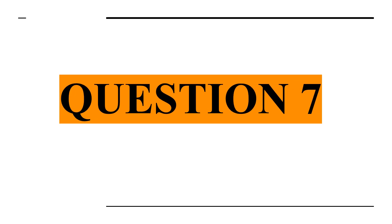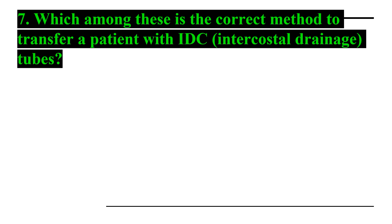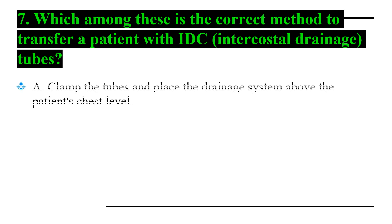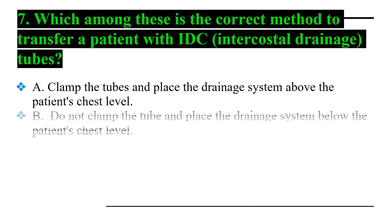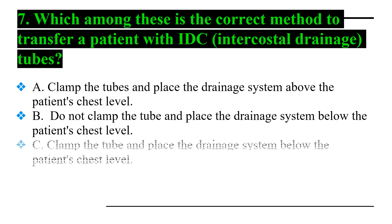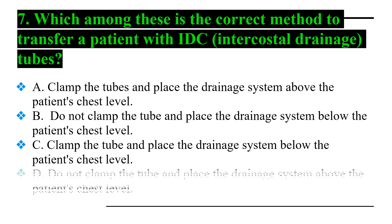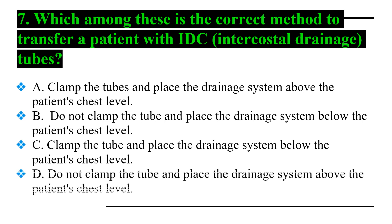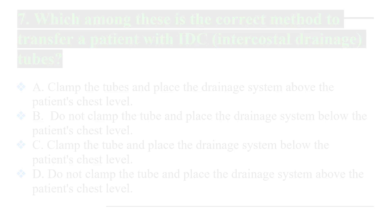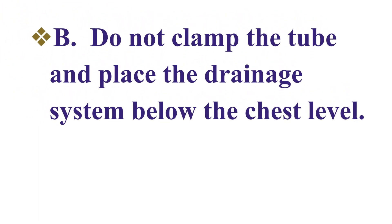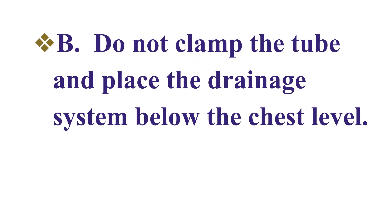Question number seven: which among these is the correct method to transfer a patient with IDC intercostal drainage tubes? Option A: clamp the tubes and place the drainage system above the patient's chest level. Option B: do not clamp the tube and place the drainage system below the patient's chest level. Option C: clamp the tube and place at the patient's chest level. Option D: do not clamp the tube and place the drainage system above the patient's chest level. Answer number seven: Option B — do not clamp the tube and place the drainage system below the chest level.